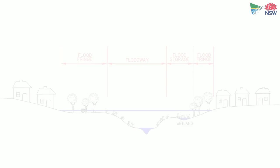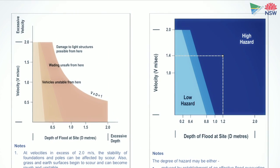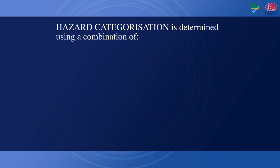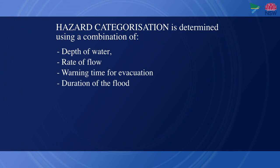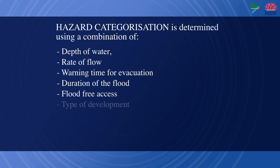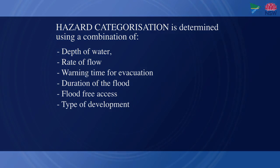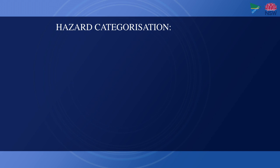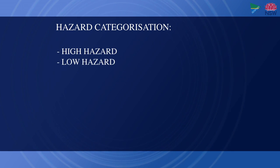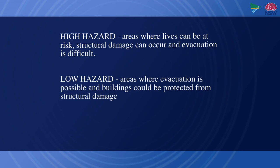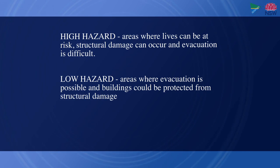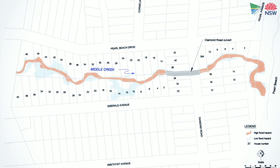Secondly, it is necessary to define the hazard categories. These are determined using a combination of factors such as depth of water, rate of flow, warning time for evacuation, duration of the flood, flood-free access and type of development. These categories are defined as high hazard and low hazard. High hazard areas are those where lives can be at risk, structural damage can occur and evacuation is difficult. Low hazard areas refer to those where evacuation is possible and buildings could be protected from structural damage.